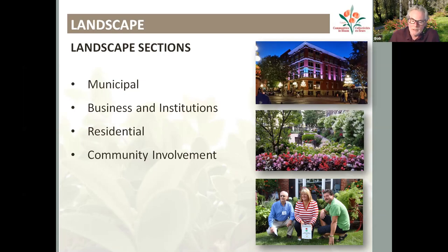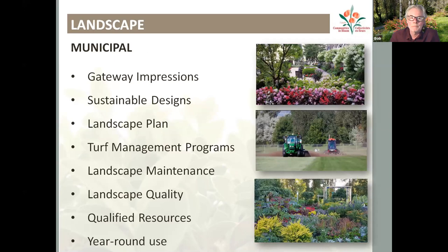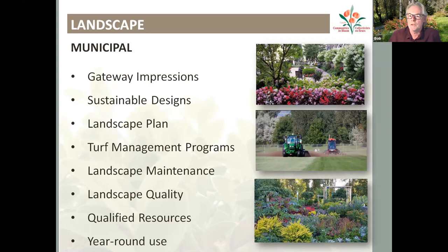So what does all this mean? Consider it not just the landscape but the cityscape or the townscape. Judges will be looking at how the natural and built infrastructure is blended together to make the town or city a better place to live and how it improves the quality of lives of the community. Judges will also take into account how it's integrated with other sections of the evaluations, particularly floral displays, urban forestry, tidiness, and environmental action. For municipal criteria, elements include gateway impressions, sustainable designs, landscape plan, turf management programs, landscape maintenance, landscape quality, qualified resources, and all-year-round appeal.